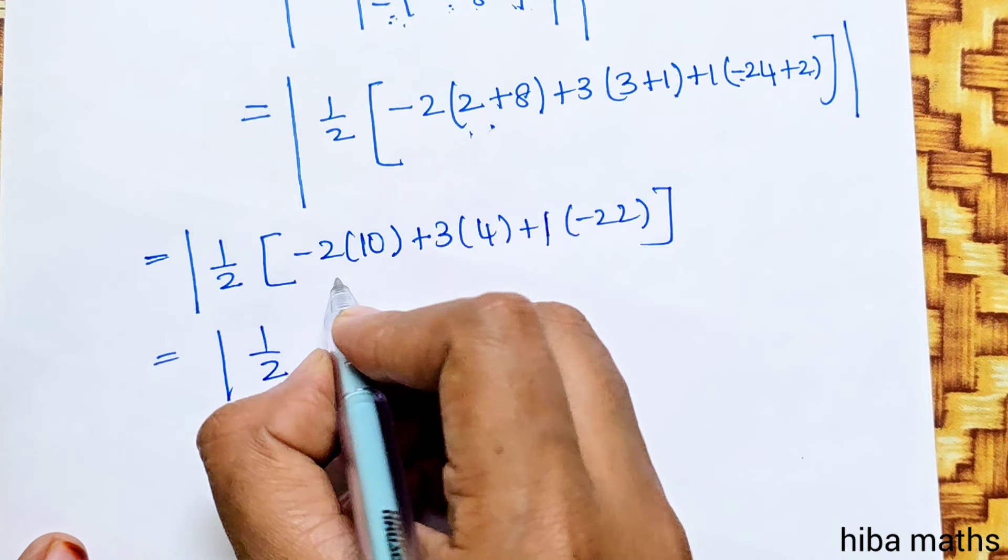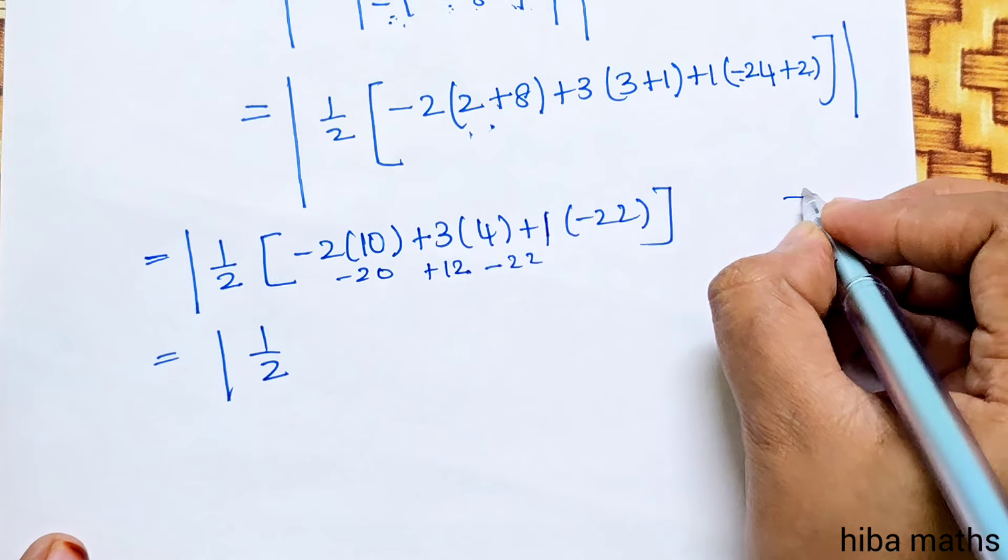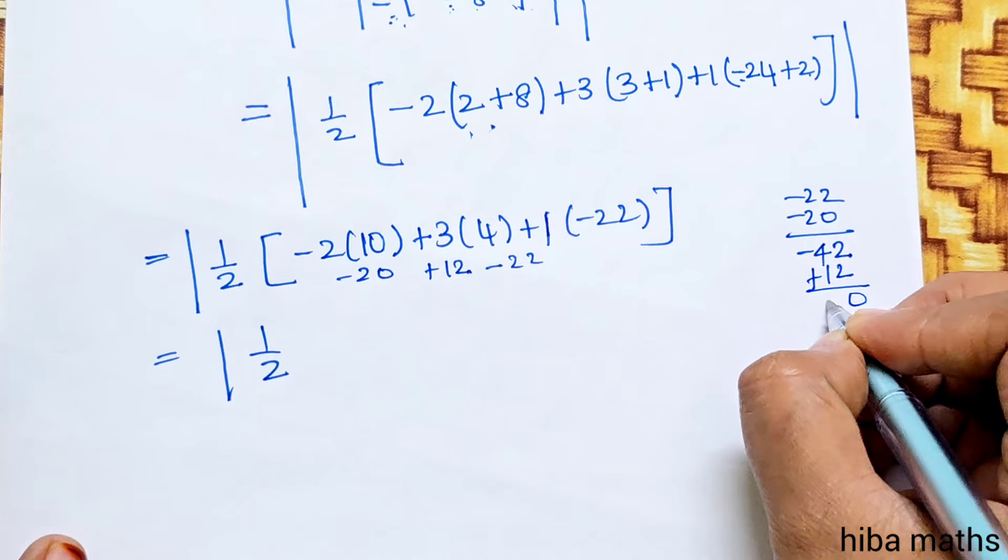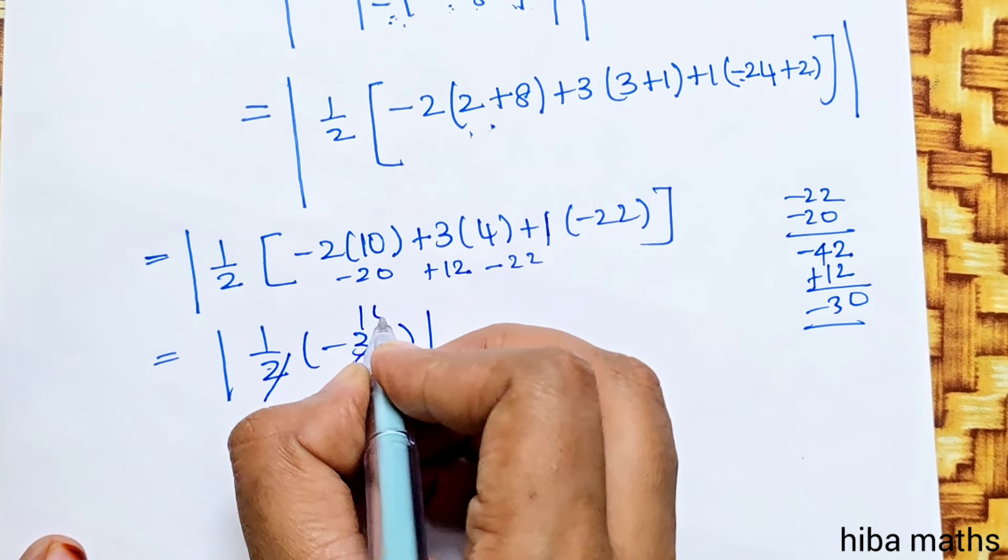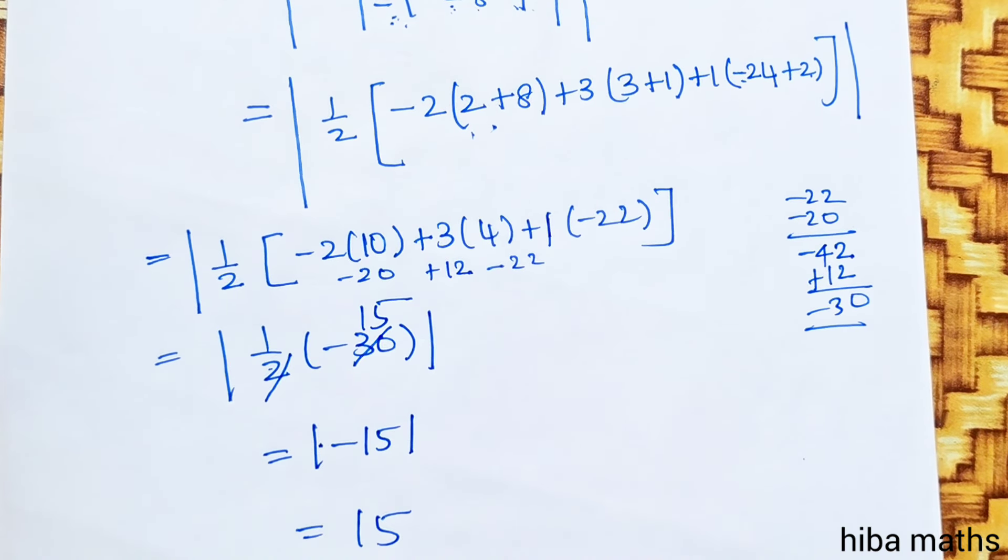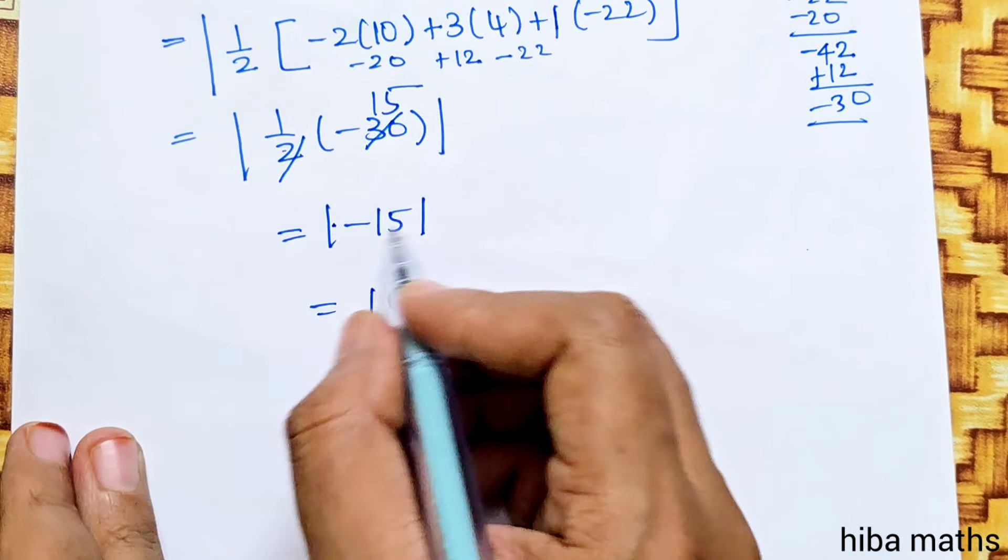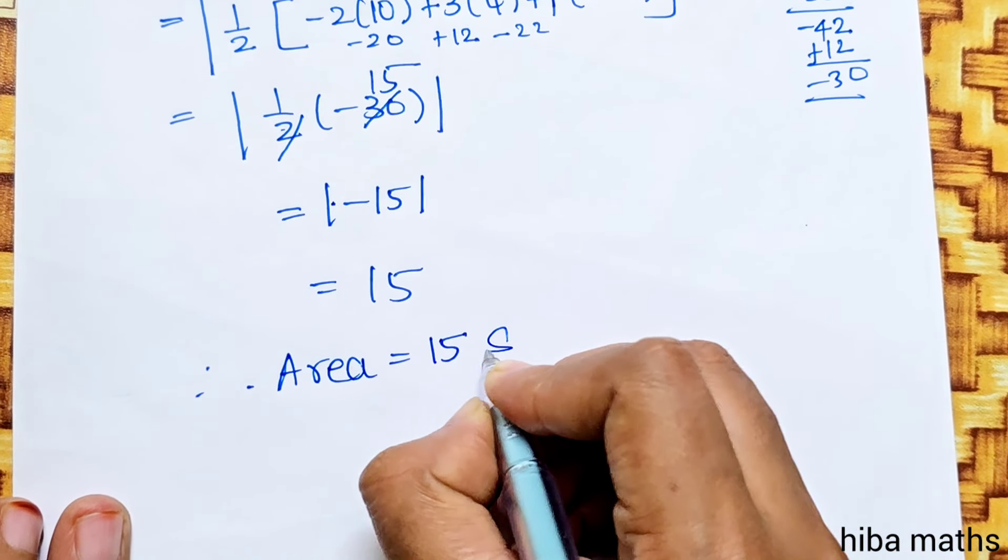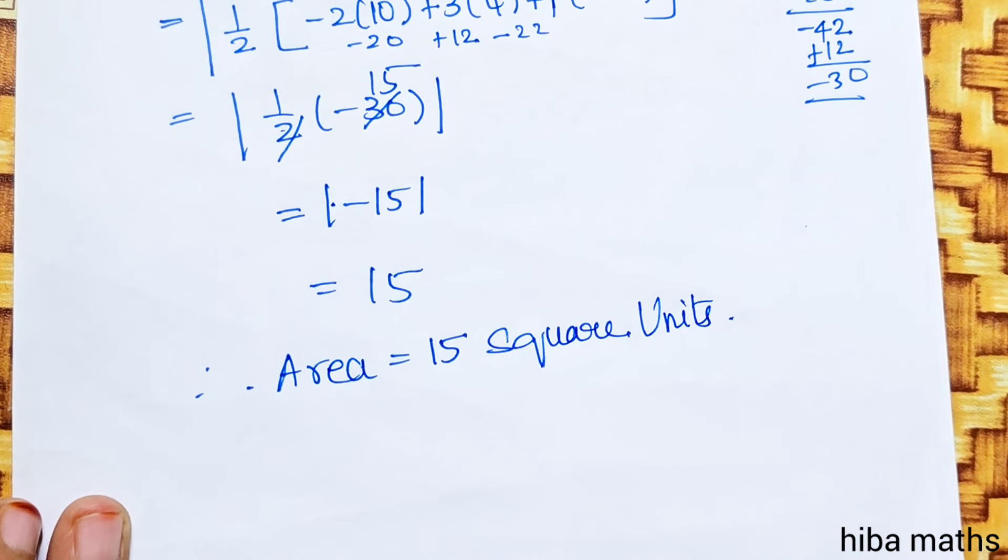So we get 1/2 times (-30). The modulus is 15. Therefore the area equals 15 square units.